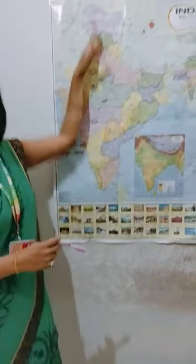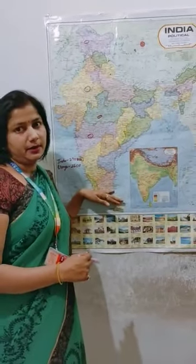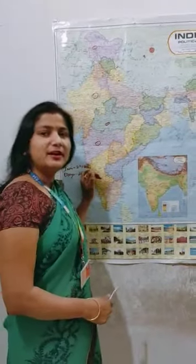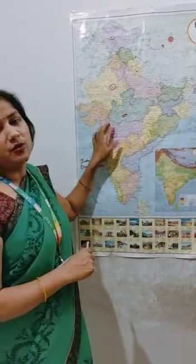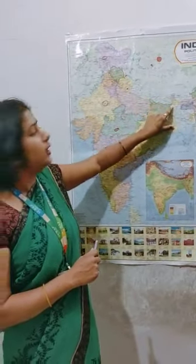Look at the map. When we divide our country into two equal halves, this is the northern part and this is the southern part. Today we will learn about the northern plain. The plain land covers states including Punjab, Haryana, Uttar Pradesh, Bihar, West Bengal, and Assam.